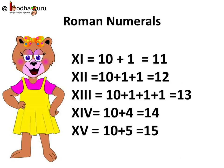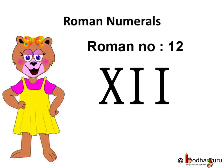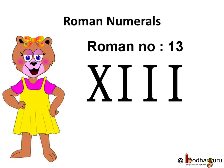Going beyond 10 — how to write 11, 12, 13, etc. Just remember how to write 1 to 10. Now, what is 11? 11 is 10 plus 1, so 11 is X followed by I. Similarly, 12 is 10 plus 2, so X and 2 I's makes 12. 13 is X followed by 3 I's.